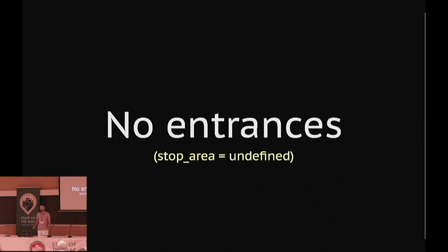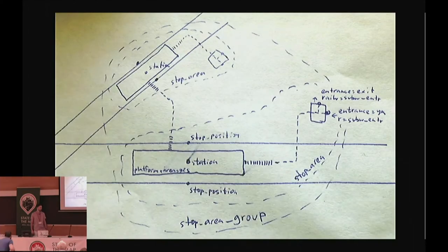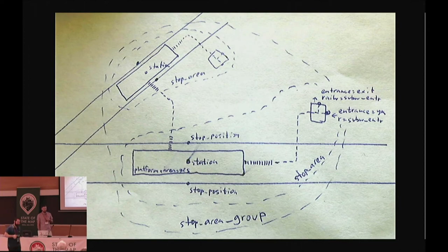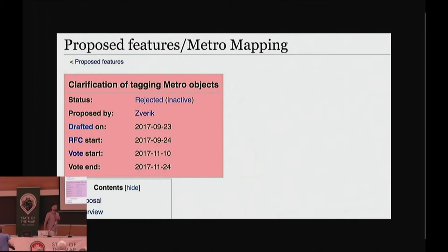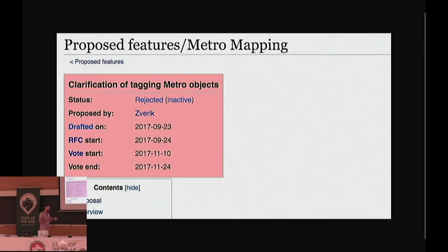So I made a wiki page on how to map a subway properly — looks very complex but it isn't actually. I made this into a proposal, but it didn't catch on because I made the mistake of wording it like a tutorial for new mappers, and I copied a lot of stuff from other wiki pages that were already accepted. It turned out that OpenStreetMap mappers don't like the status quo described on other wiki pages, so I had to do something else.